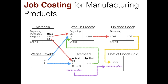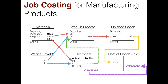The flip side is over-applied overhead — when the credit side of the overhead T-account exceeds the debit side, meaning we've applied too much cost and cost of goods sold is too high. Since cost of goods sold is an expense account with a normal debit balance, to reduce it we credit the account. So if we have over-applied overhead, we credit cost of goods sold for that over-applied amount.